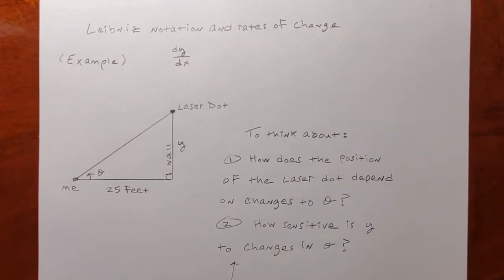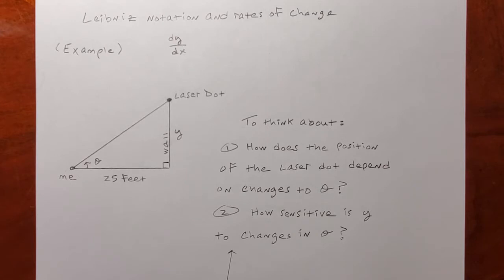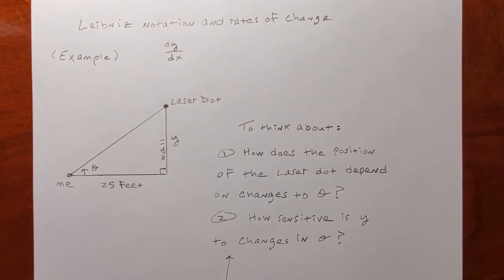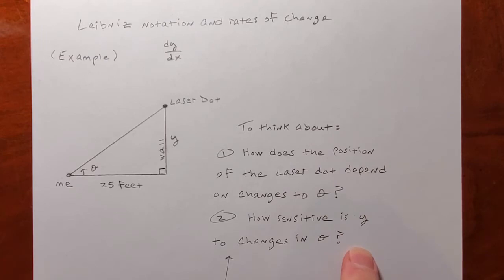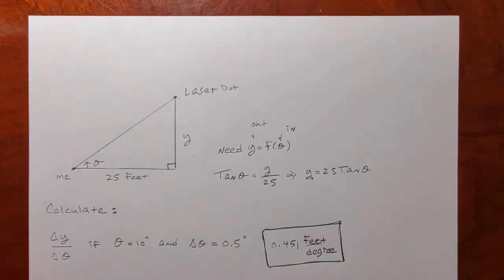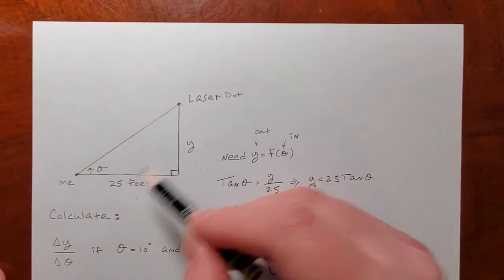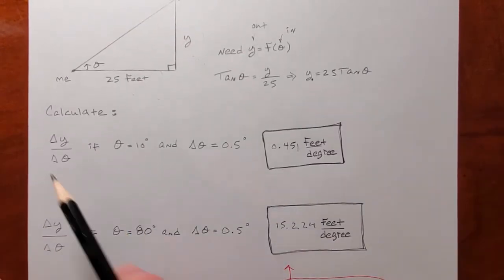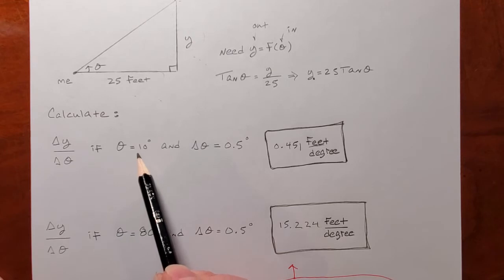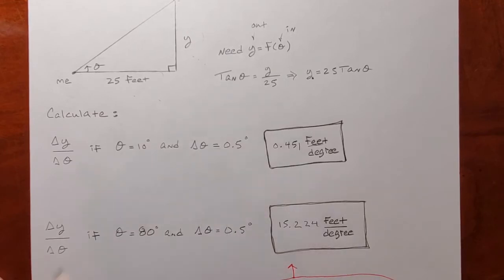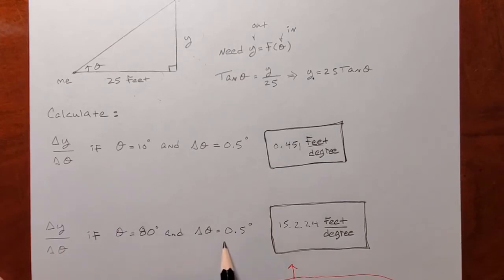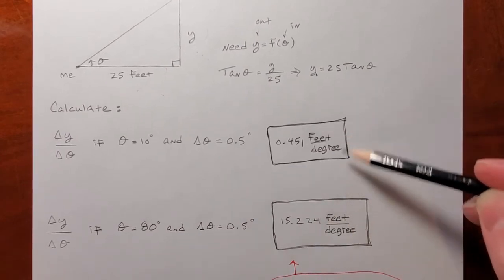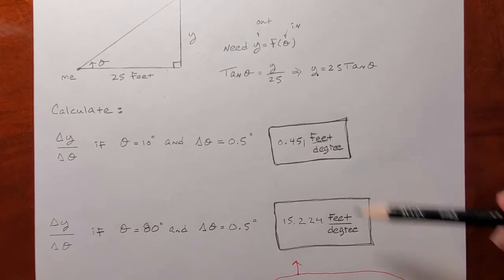So far I haven't done any math. I just want you to think about this situation. Now I'll begin the math and tell you how the questions are going to look. Take the same situation — me shining the laser pointer at the wall, all the same variables defined — and suppose I want you to calculate Δy/Δθ if theta is 10 degrees and theta changes by half of a degree, and Δy/Δθ if theta is 80 degrees and theta changes by half of a degree.